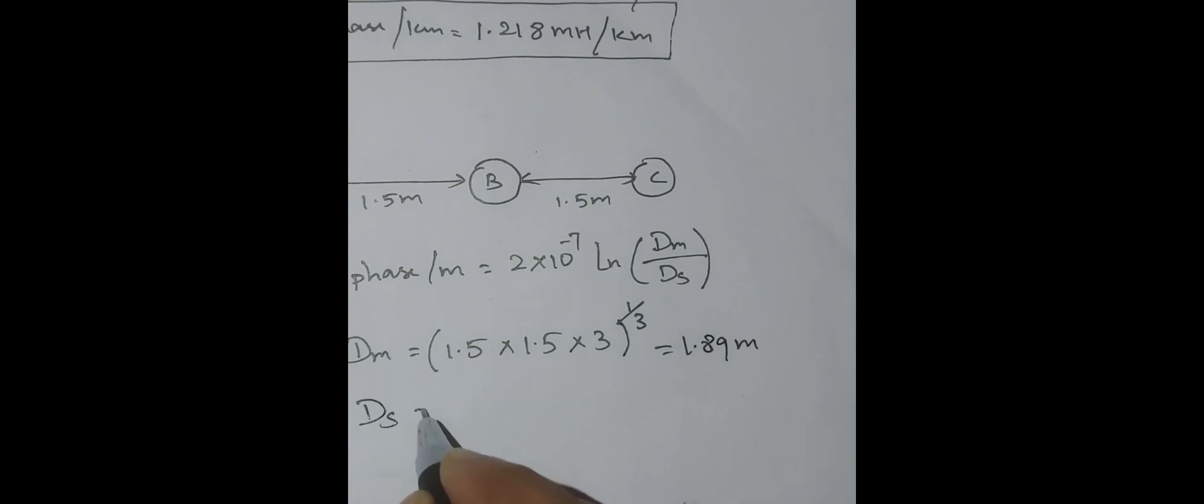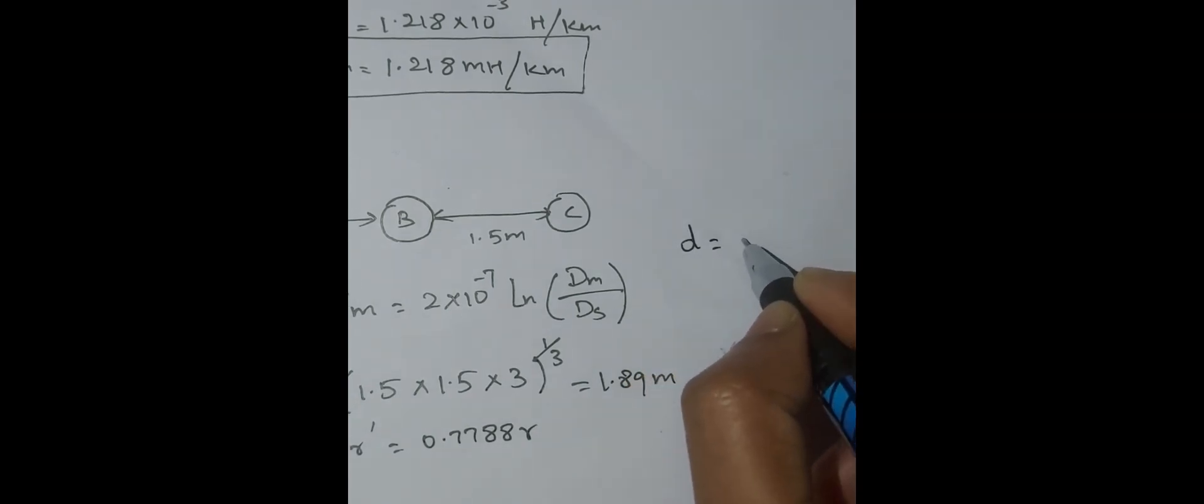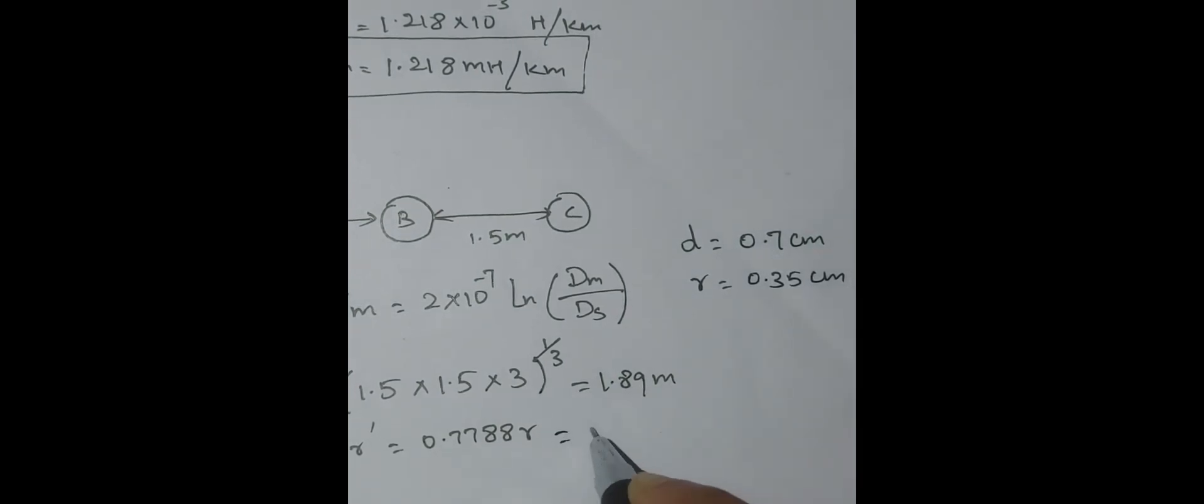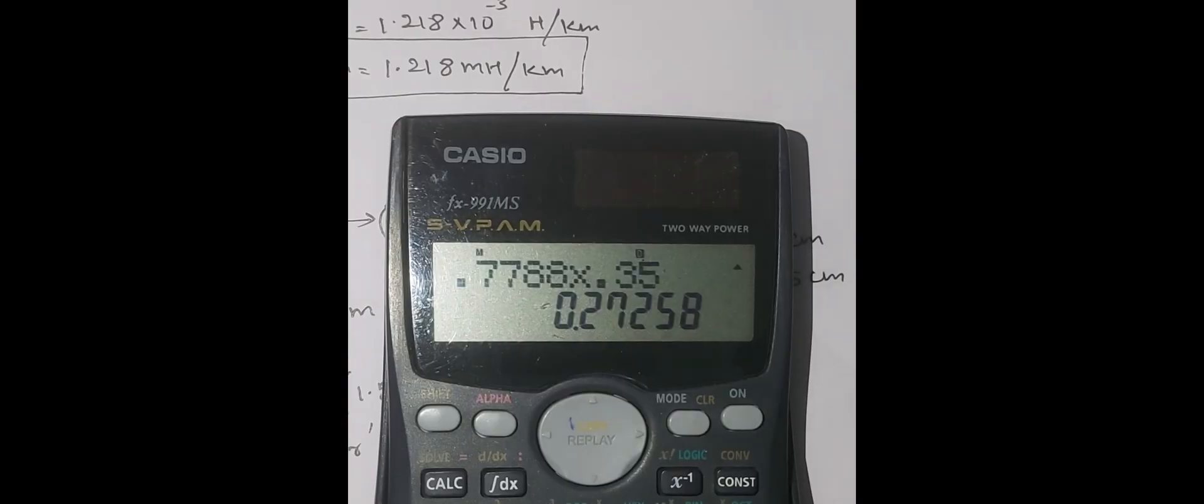And DS we will get as R dash, so 0.778 R. The given data, diameter only is given and diameter is 0.7 centimeter. So radius is 0.35 centimeter. So you have to multiply this 0.778 multiplied by 0.35.